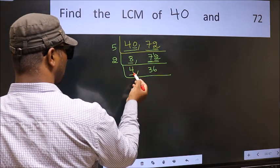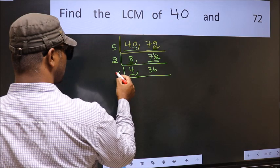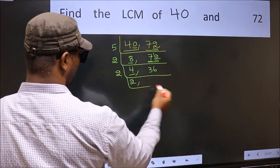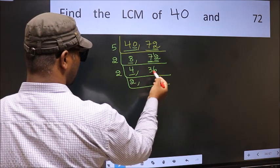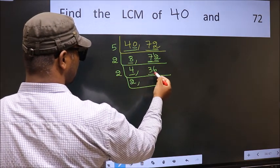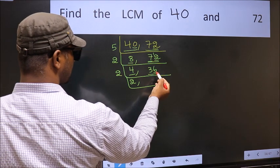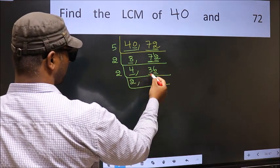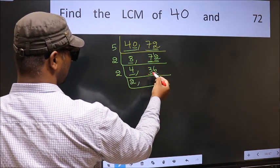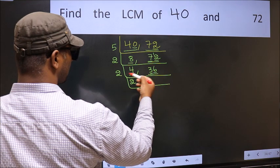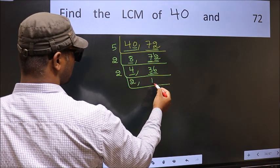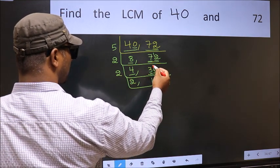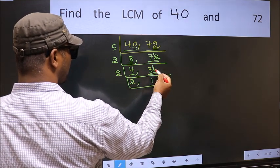Now here we have 4. 4 is 2 times 2, giving 4. The other number, 36, last digit 6, which is even, so it is divisible by 2. For the first number, 3 — a number close to 3 in the 2 table is 2 times 1 is 2. 3 minus 2 is 1, carried forward gives 16.